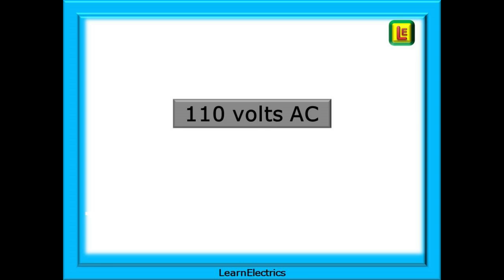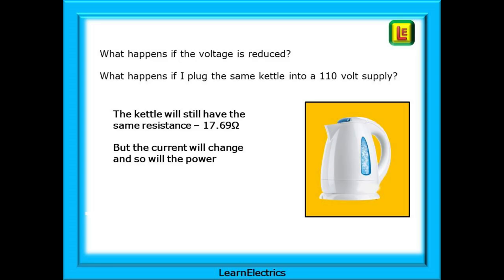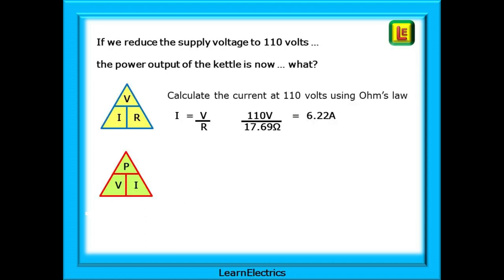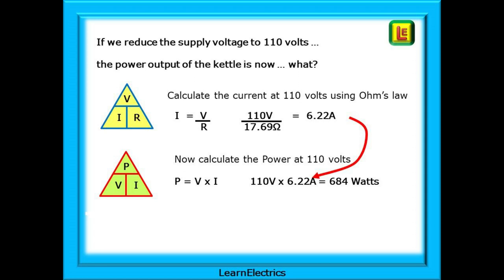Now we can look at what happens when the same kettle is connected to a 110 volt supply — the original question. The kettle still has the same resistance of 17.69 ohms, but the current and power will change with the voltage. Using Ohm's Law: 110 volts divided by 17.69 ohms equals 6.22 amps. Using the Power triangle: 110 volts multiplied by 6.22 amps equals 684 watts — significantly lower than before.